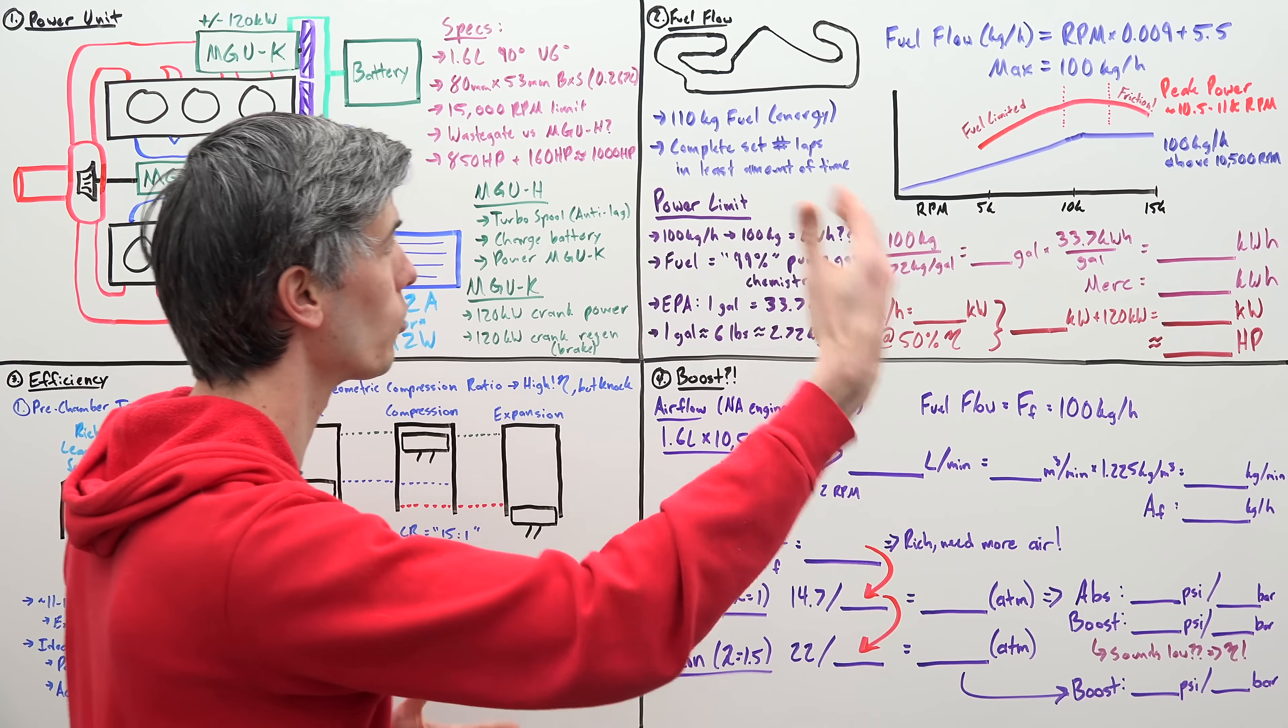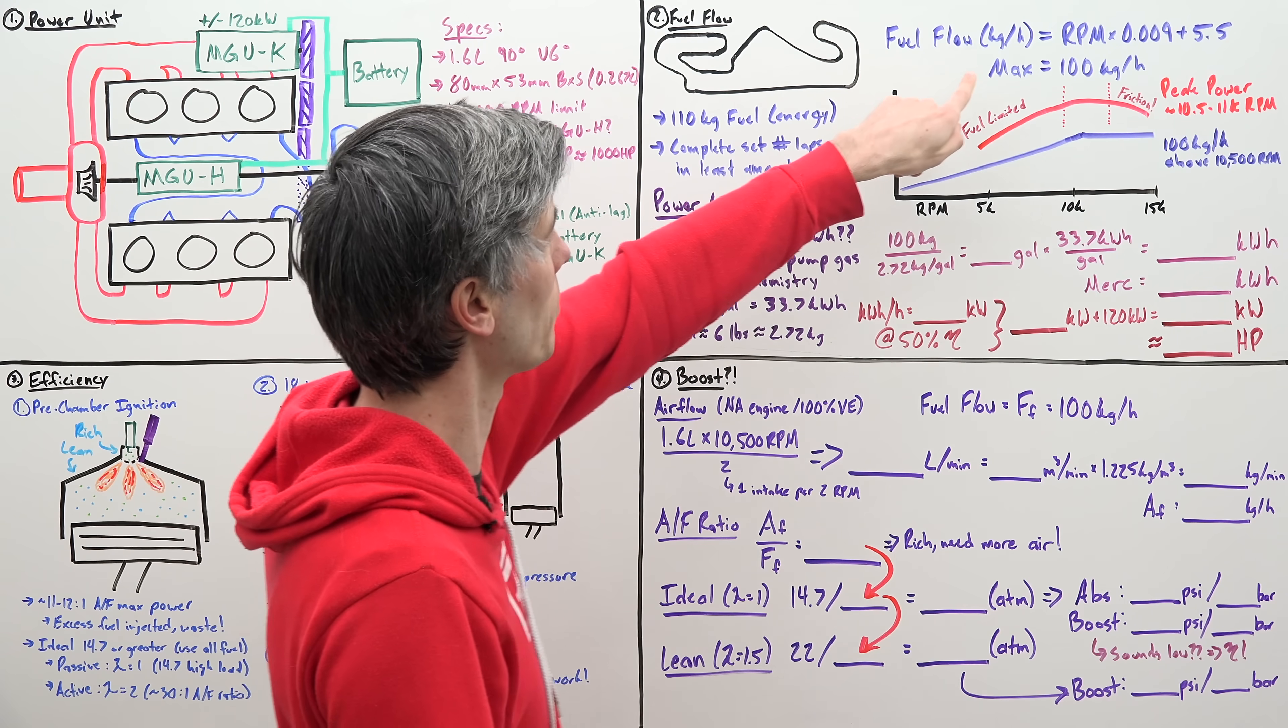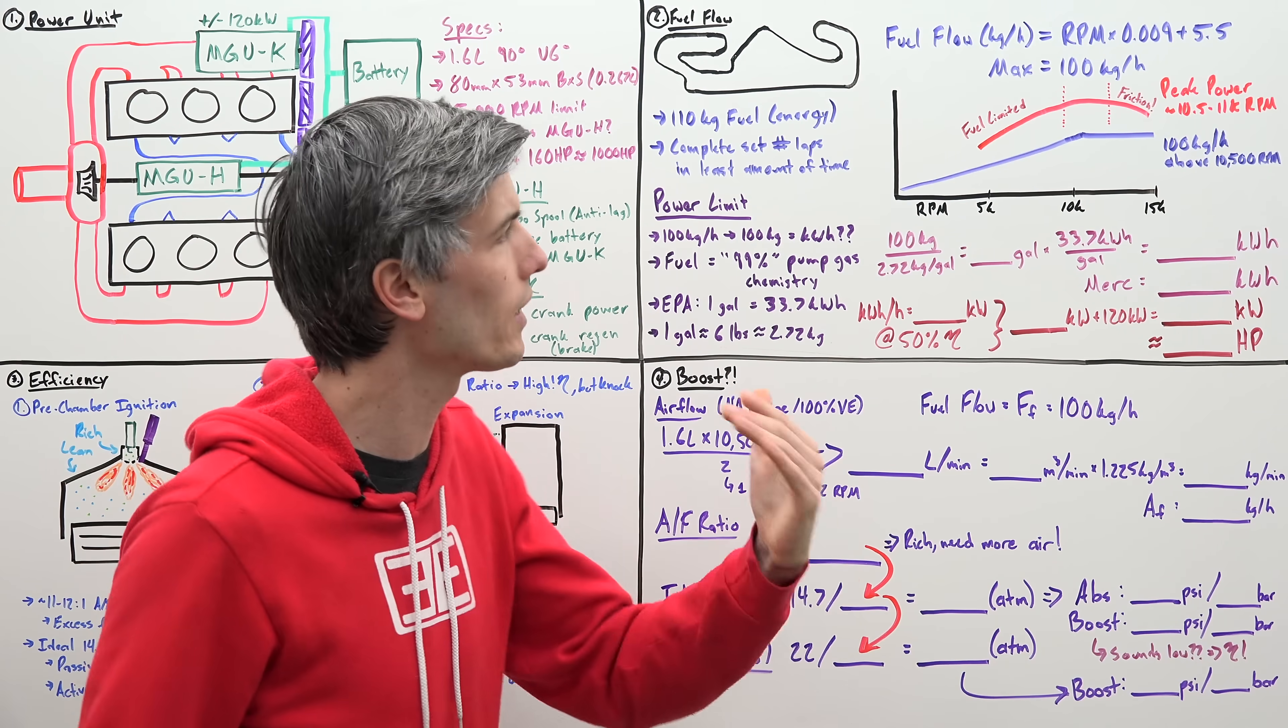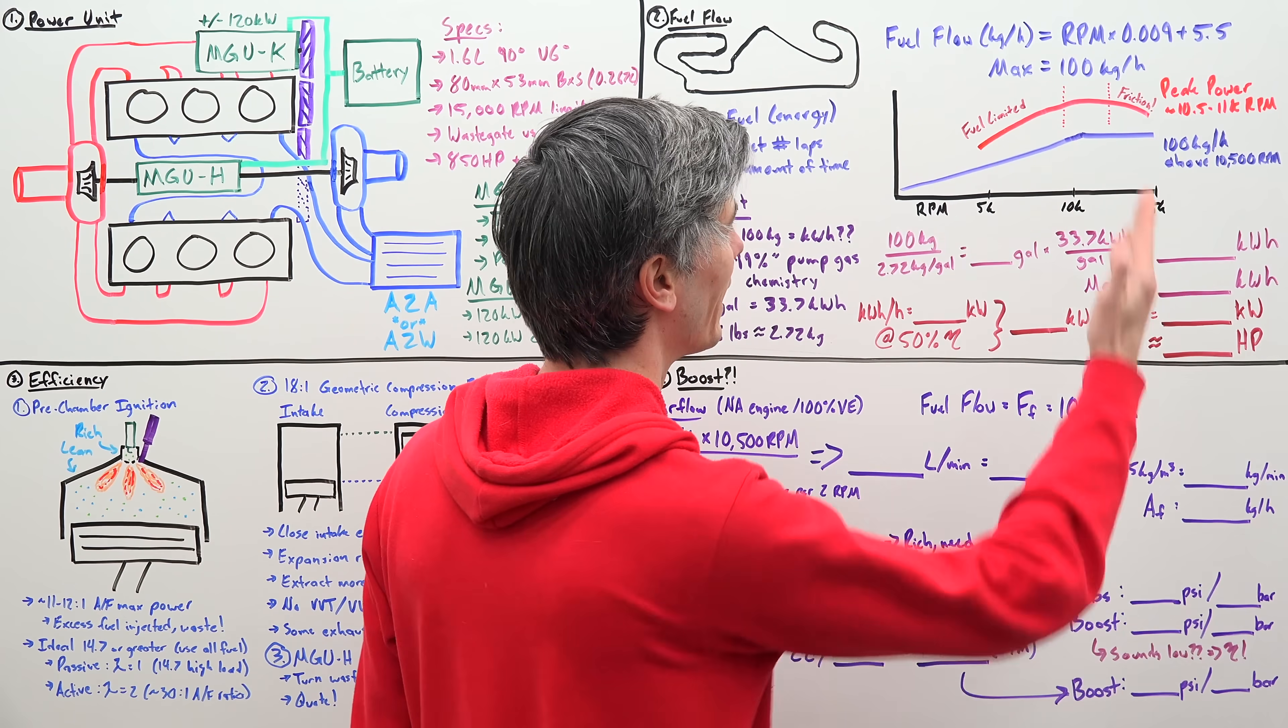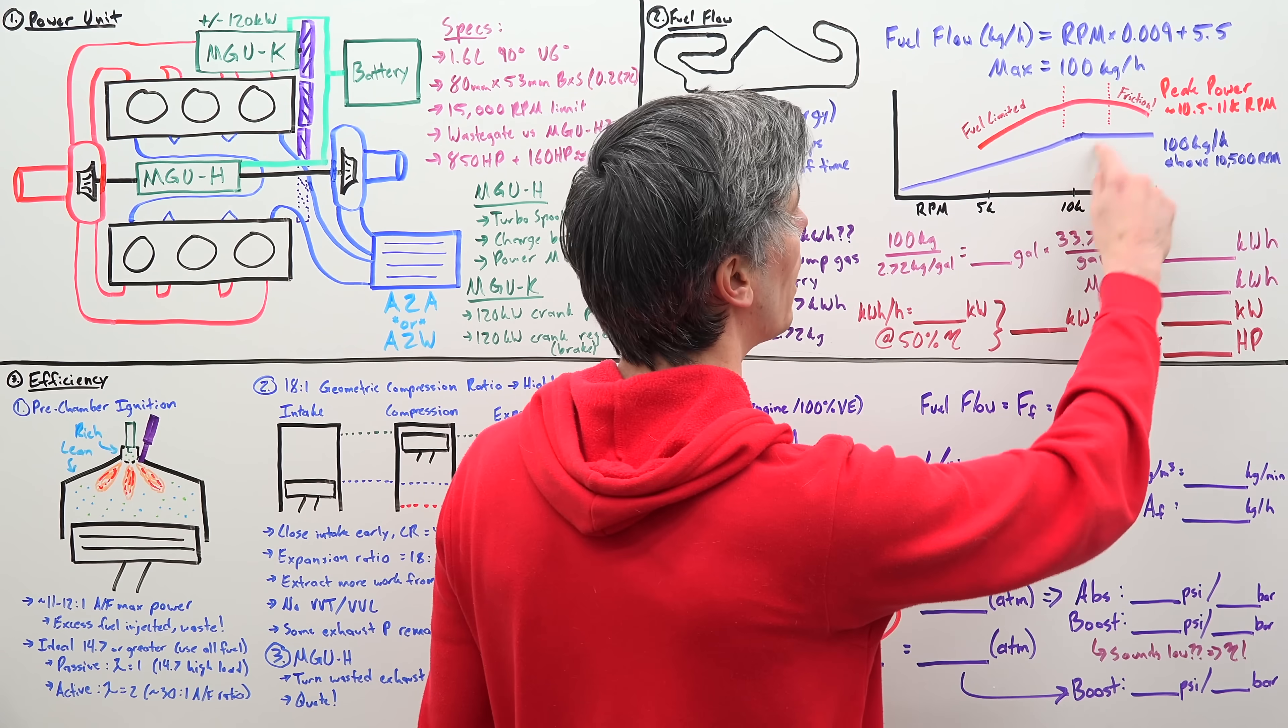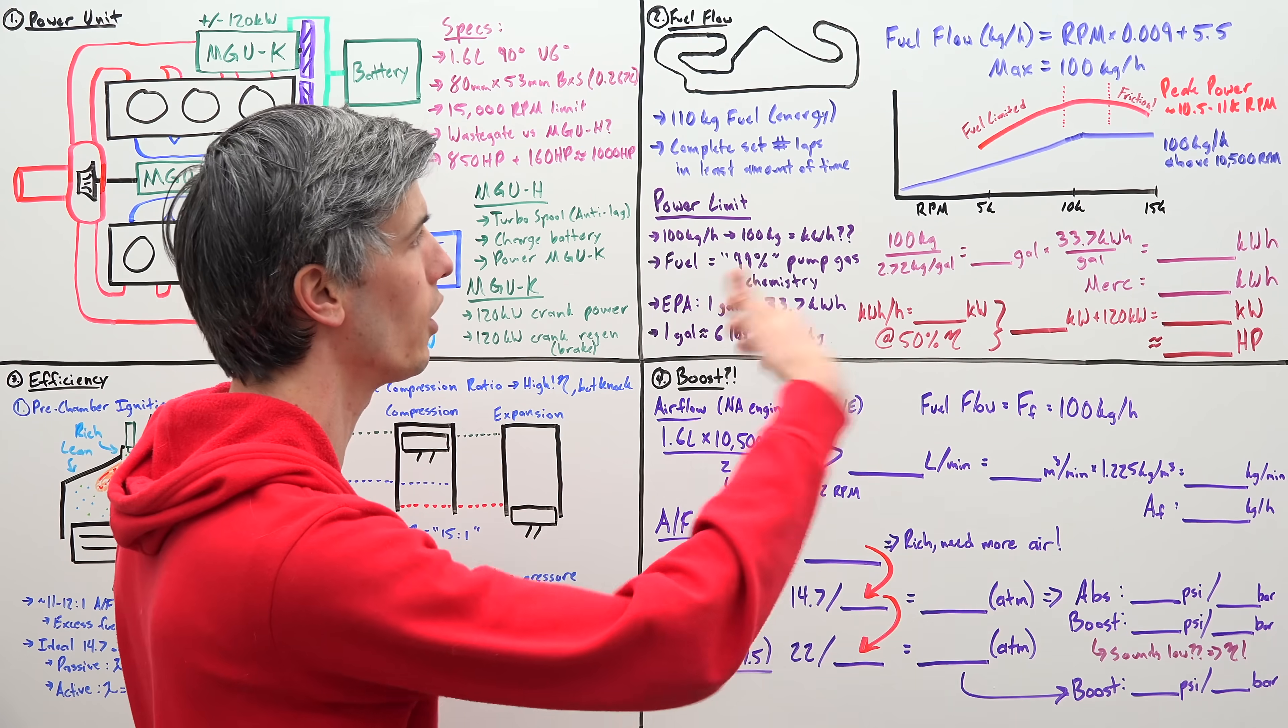Now, as far as the second rule, that comes down to fuel flow. So there is a cap on how much fuel you can have going into your engine, which is dictated by this equation here. Fuel flow is equal to RPM times 0.009 plus 5.5 with a limit of 100 kilograms per hour. So you can never have more than 100 kilograms per hour of fuel going into your engine. So what does this equation look like when you plot it out? Well, basically, it's a linear function and it caps out at 10,500 RPM. So at 10,500 RPM, you're allowed to use this maximum fuel flow of 100 kilograms per hour.